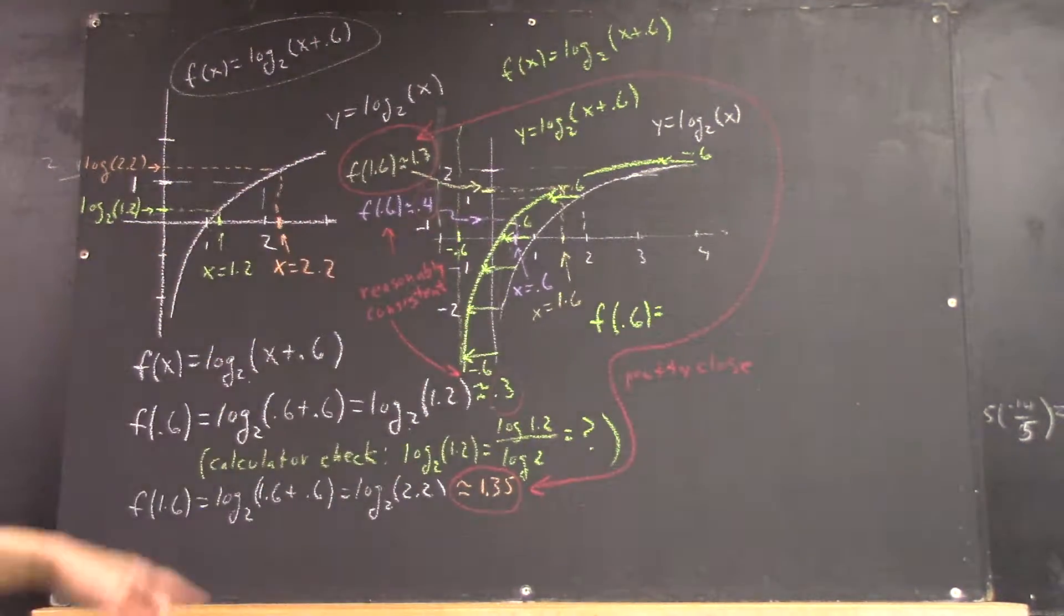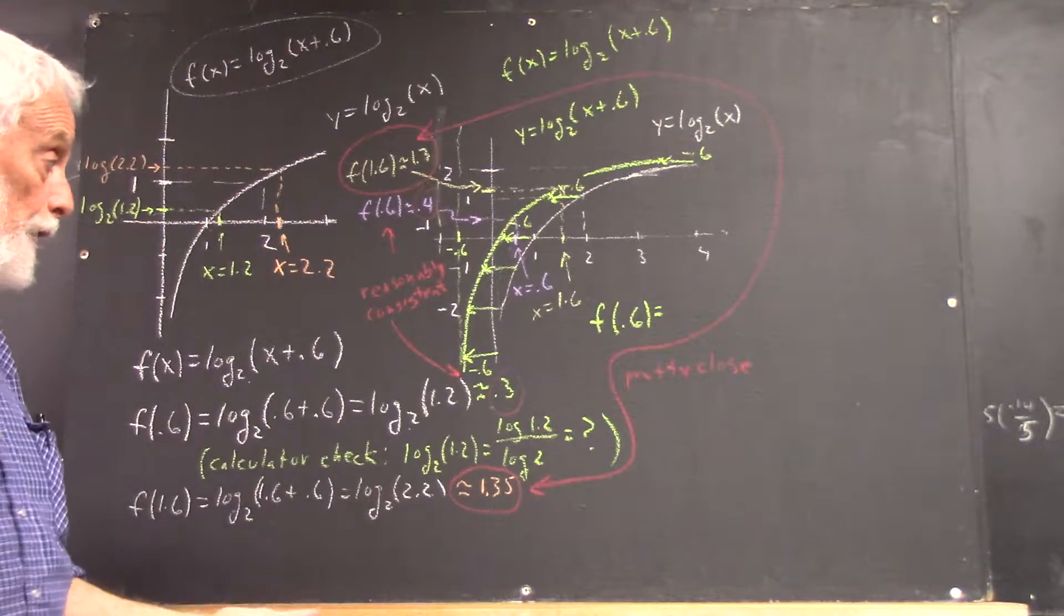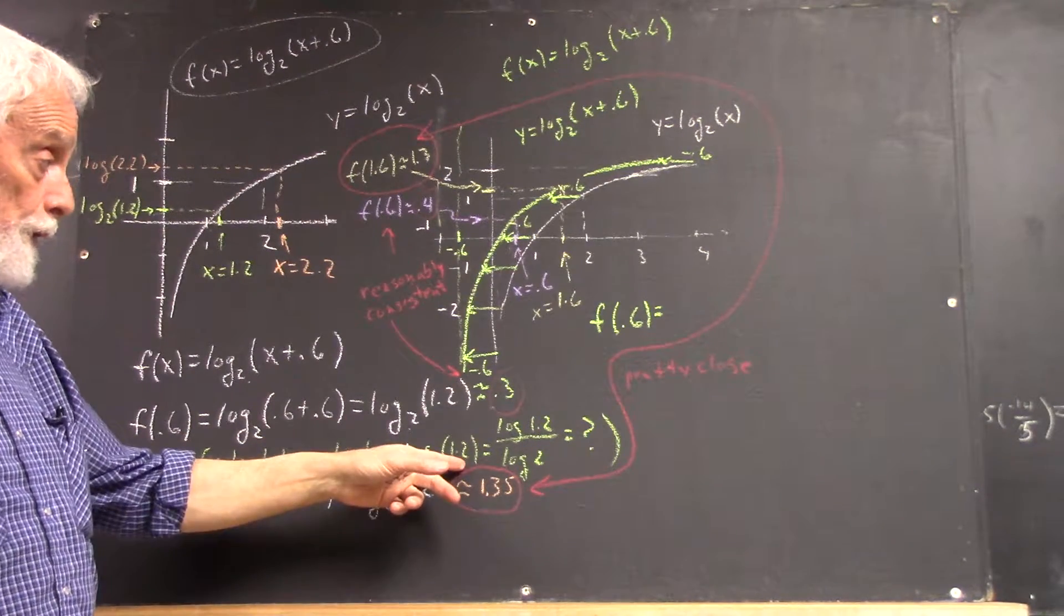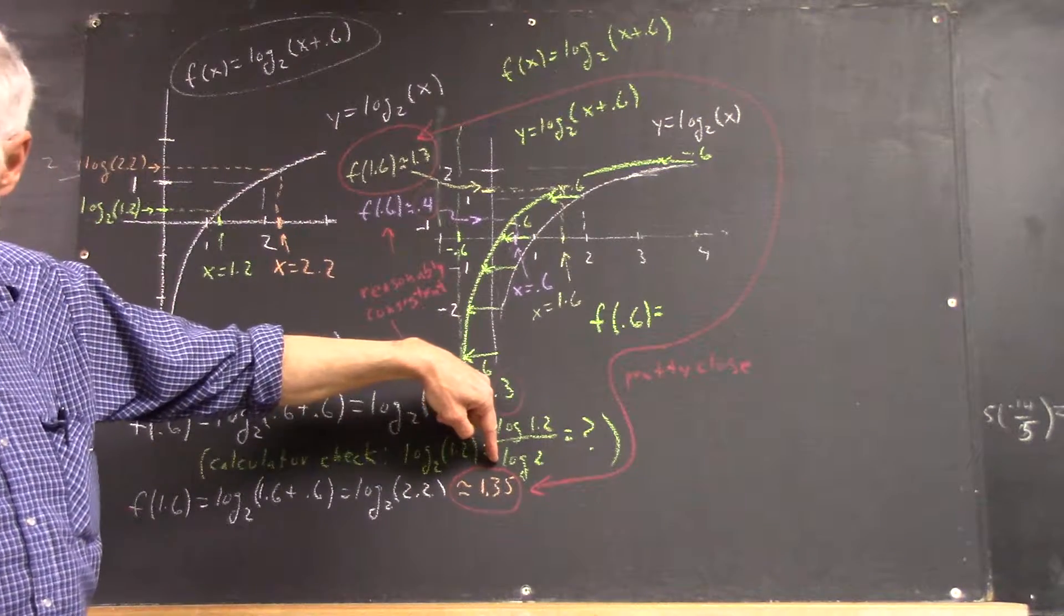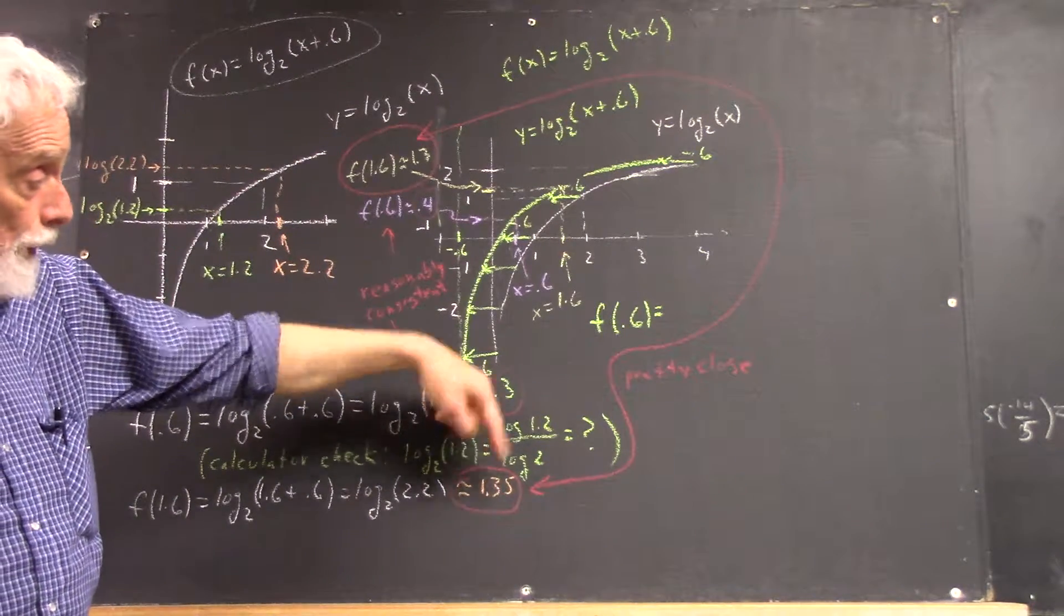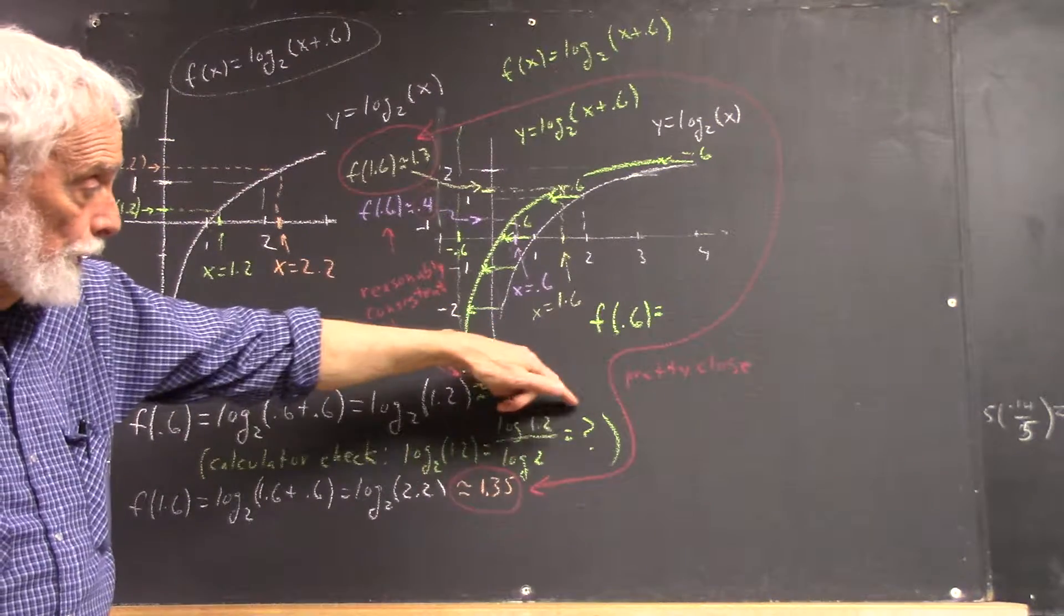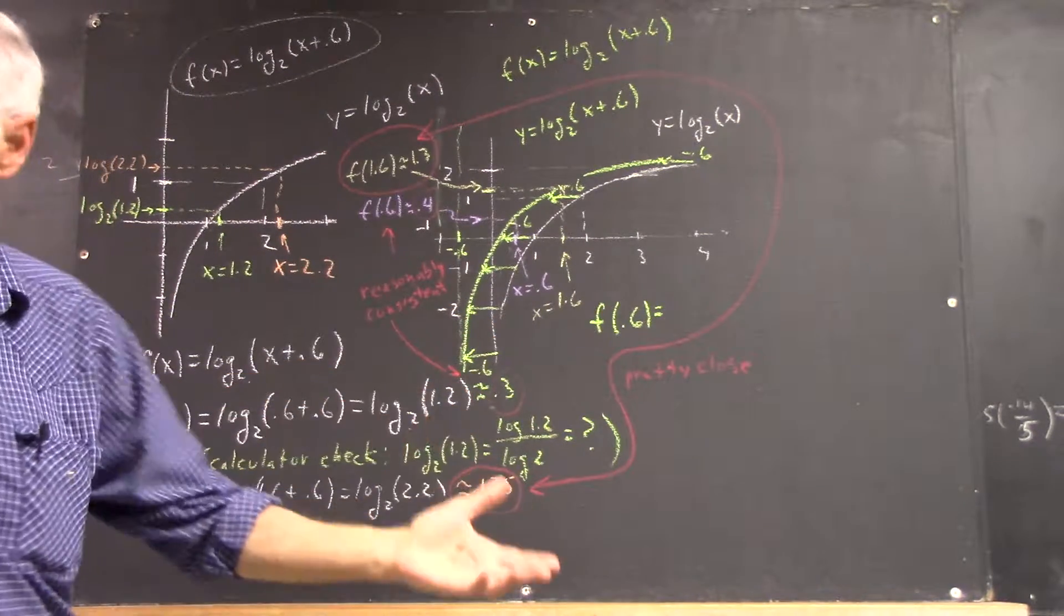Now, I also said you can use a calculator to check it because log base 2 of 1.2 by the rule I gave you is the log of 1.2 divided by the log of 2. And you would have used that, I think, in your homework. So, you figure that out and see how close that is to 0.3.